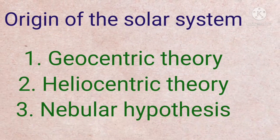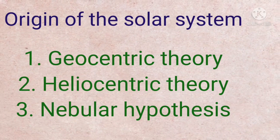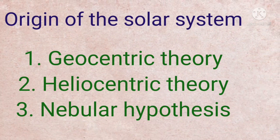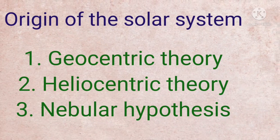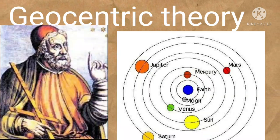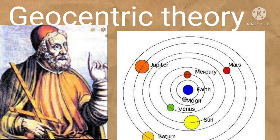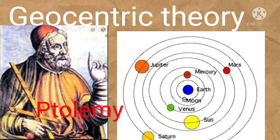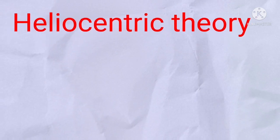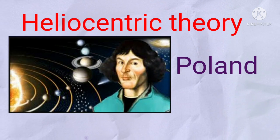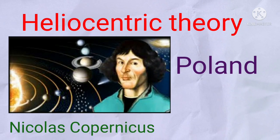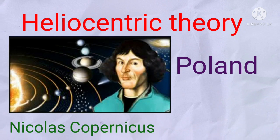There are many various theories about the origin of the solar system. Some of the important theories are: first, the geocentric theory, which means Bhukendrakasiddhantam. This theory was proposed by Egyptian astronomer Ptolemy. Second is the heliocentric theory, proposed by Polish astronomer Nicholas Copernicus. According to him, the sun is the center of the universe.